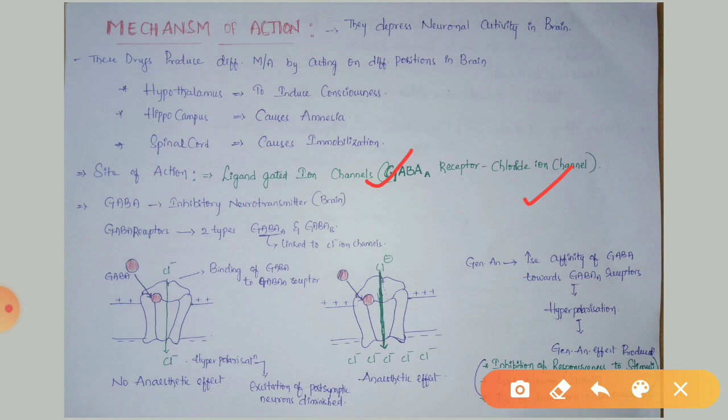In normal conditions, GABA binds with the GABA-A receptor